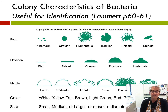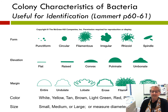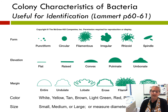Colonies also have different elevations — that is, how far they appear above the surface of the agar. They can be flat, raised (just slightly above the agar), convex or dome-shaped, pulvinate (which is a big dome, almost like a gumdrop), or umbonate.